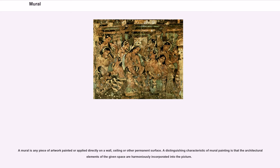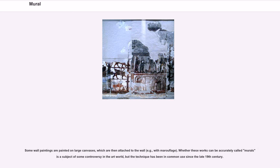A mural is any piece of artwork painted or applied directly on a wall, ceiling or other permanent surface. A distinguishing characteristic of mural painting is that the architectural elements of the given space are harmoniously incorporated into the picture. Some wall paintings are painted on large canvases which are then attached to the wall, for example with marouflage. Whether these works can be accurately called murals is a subject of some controversy in the art world, but the technique has been in common use since the late 19th century.